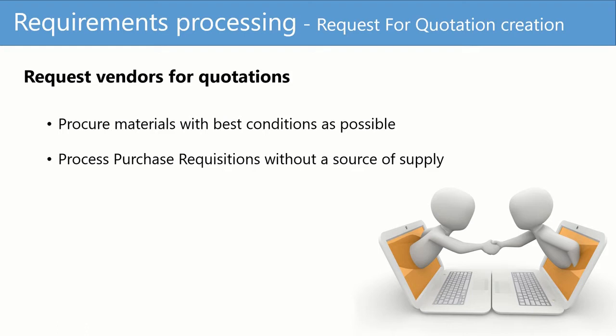They can procure materials with the best conditions possible, such as product prices, delivery time and delivery conditions, and easily compare them between each other directly in the system. It also allows them to process the purchase requisitions without a defined source of supply and find the best one for the future order.